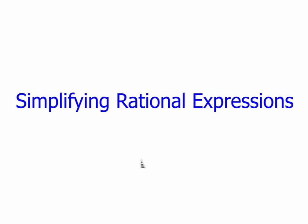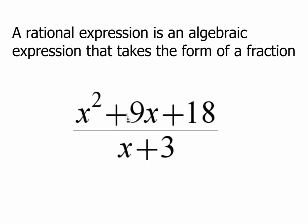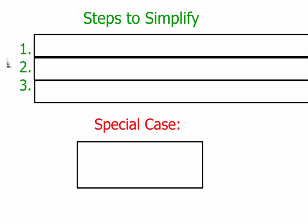For this video, we're going to be discussing simplifying rational expressions. So what's a rational expression? Well, a rational expression is an algebraic expression that takes the form of a fraction. So an example would be like this: x squared plus 9x plus 18 all over x plus 3. So it's a fraction where both the top and the bottom are algebraic expressions. We're going to be talking today about how to simplify them.